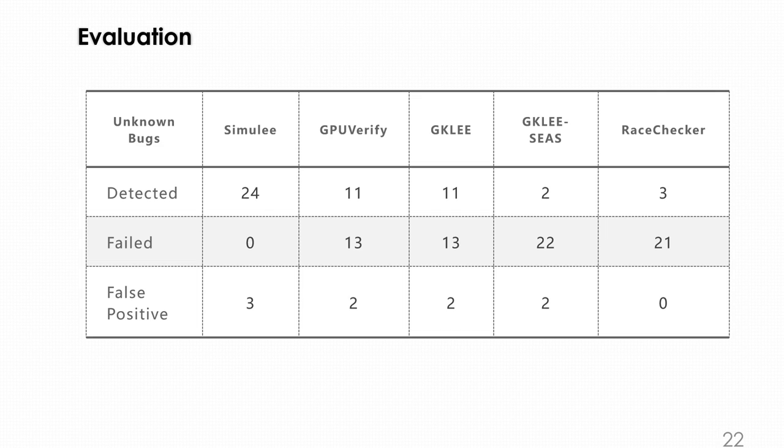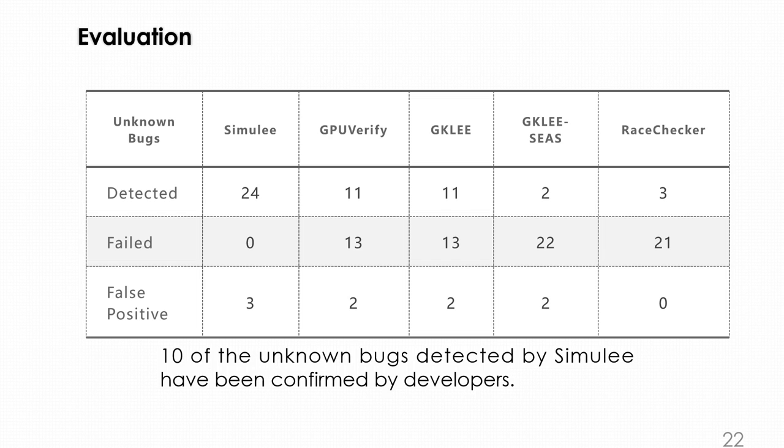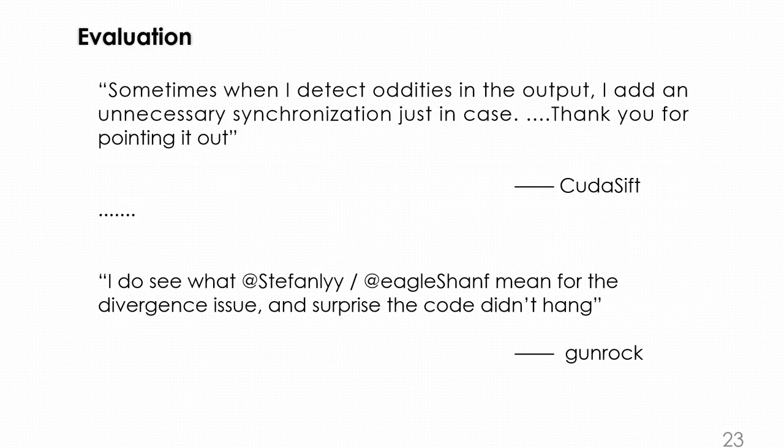For unknown bugs, Simuli can detect all of the unknown bugs while reporting 3 false positives, while the other approaches have less performance compared to Simuli, because Simuli can detect more real-world bugs. It is designed for the real world. Ten of the unknown bugs detected by Simuli have been confirmed by developers. We have replies from developers - you can refer to the paper to get more details.